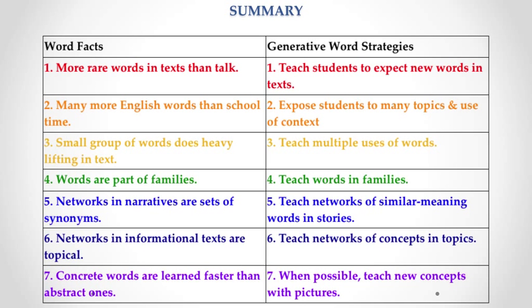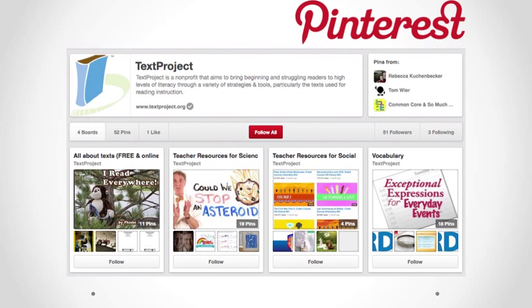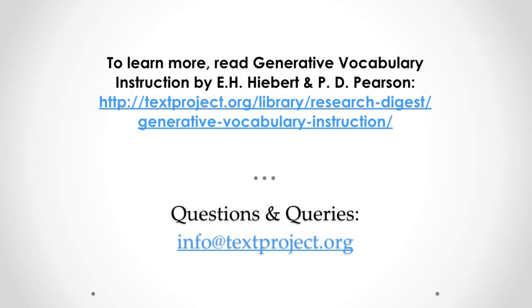In conclusion, I've presented seven word facts: ideas are stored in text with vocabulary more sophisticated than in typical talk; there are many English words; a small group does the heavy lifting; words are part of families; they're also part of networks; and those networks are different for narrative and informational text; and finally, concrete words are learned more quickly than abstract ones. For each of these, I've described a generative word strategy. I invite you to visit us at TextProject where all of the materials I've illustrated can be obtained for free download, to join us on our Pinterest site with vocabulary and other classroom materials, and to read an article on generative vocabulary that I've written with David Pearson.